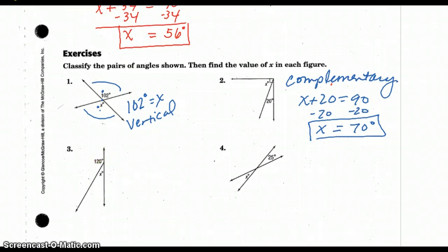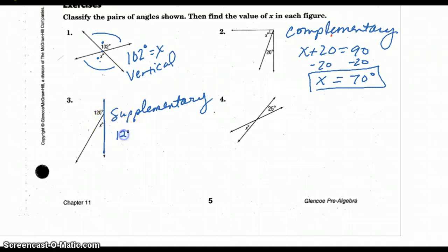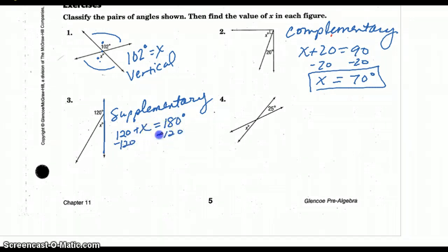These are supplementary angles — see that straight line right there? Another way to remember supplementary and complementary: c comes before s in the alphabet, and 90 comes before 180 when you're counting. So c for complementary equals 90, and s for supplementary equals 180. That might be an easier way to remember. So x is 60 degrees here. And the next pair — we have vertical angles again.